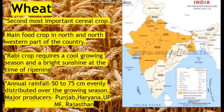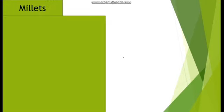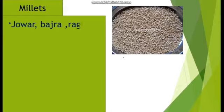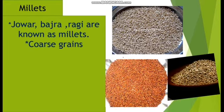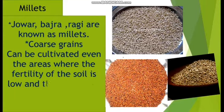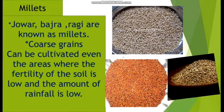You will also see small patches of Gujarat and Maharashtra. The leading producer is Uttar Pradesh and the highest per hectare production is in Punjab. Jowar, Bajra, and Ragi are known as millets or coarse grains. They can be cultivated even in areas where the fertility of the soil is low and the amount of rainfall is less — even with 50 to 60 centimeters of rainfall, when properly distributed, these grains can grow.